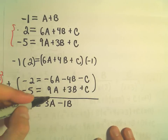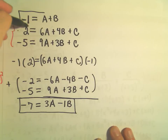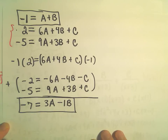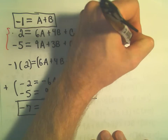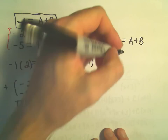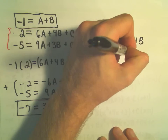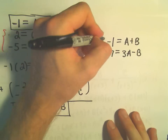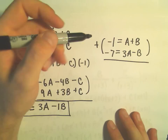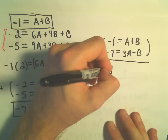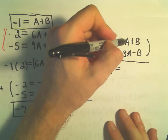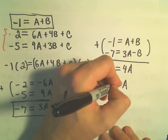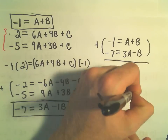Now I have two equations with the same two unknowns: negative 1 equals a plus b, and negative 7 equals 3a minus b. Using elimination by addition, the b's cancel and I get negative 8 equals 4a. Dividing both sides by 4, a equals negative 2.